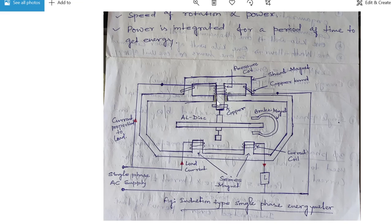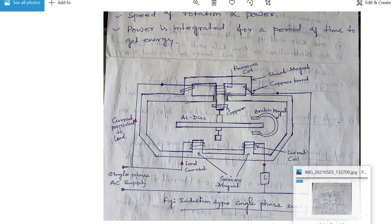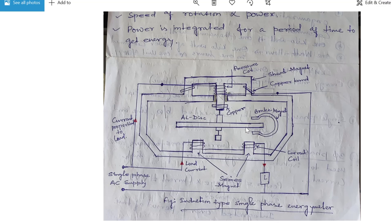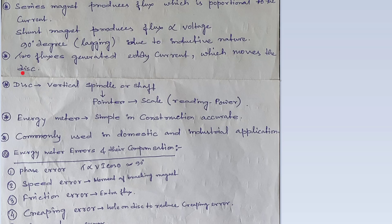90 degree lagging due to the inductive nature. Two flux generate eddy current which moves the disk. Yeh 2 flux generate ho raha hai, jiske wajah se disk rotate karega. Jo disk use kiya gaya hai, vertical spindle or shaft that is connected to the pointer, and that further connected to a scale jis par reading show hoga. Disk rotate hoga to pointer deflect hoga, and scale mein show hoga.